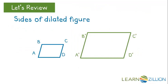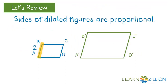Sides of dilated figures are proportional. With a scale factor of 2, you can find the length of the sides for the image by multiplying the side lengths of the pre-image by 2. So 2 times 2 is 4, and 3 times 2 is 6.